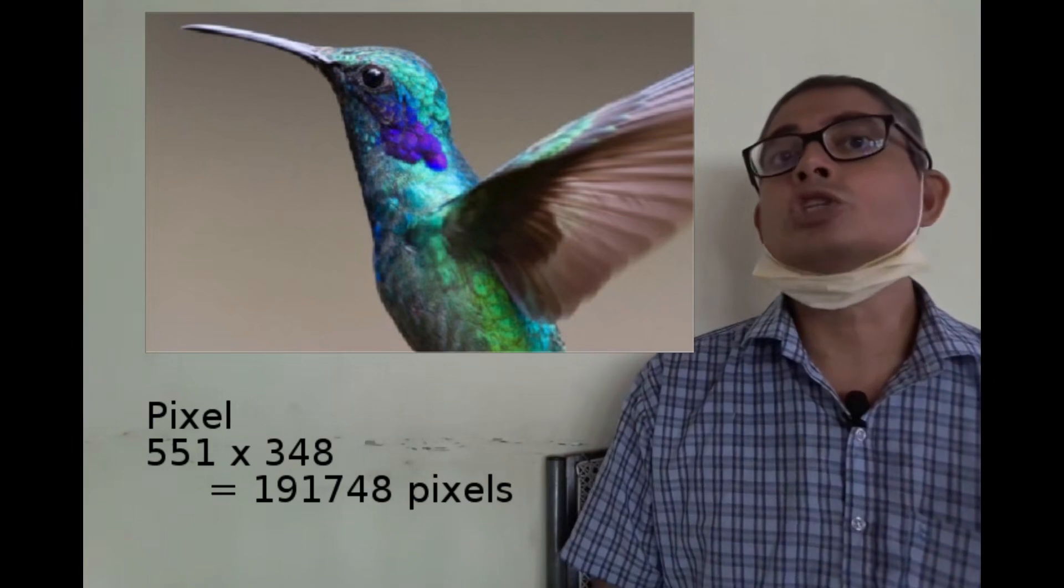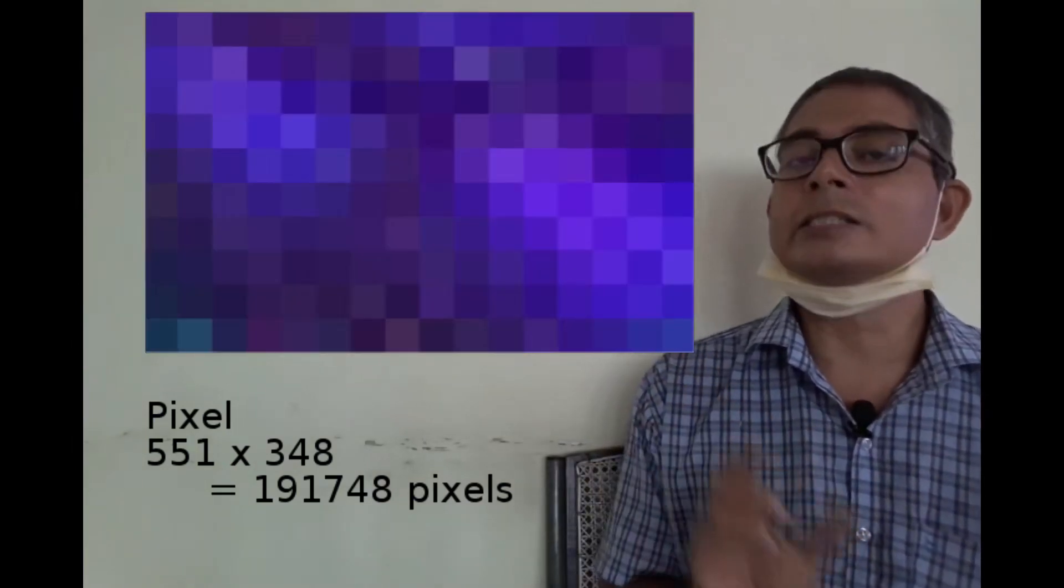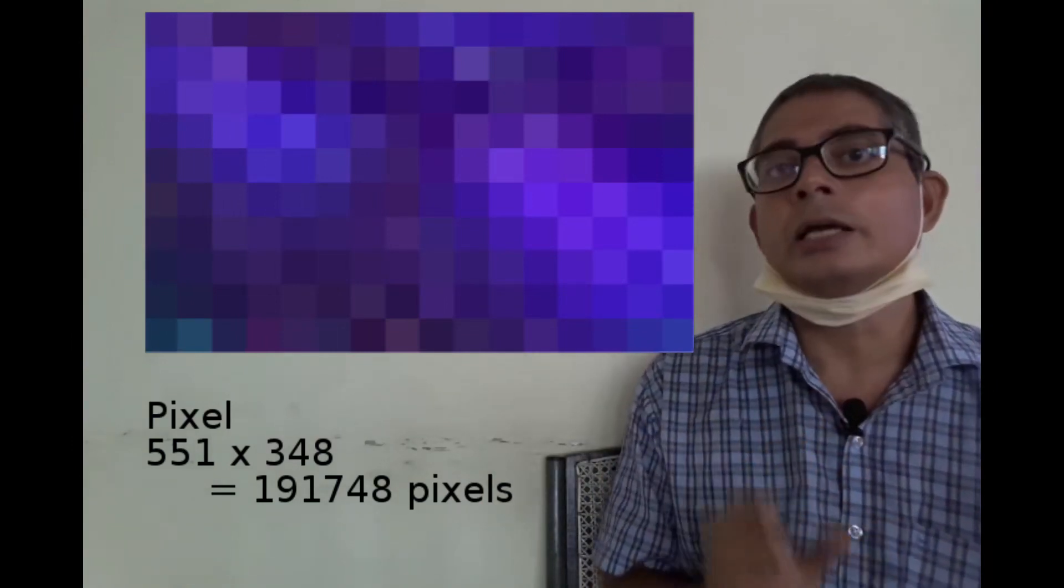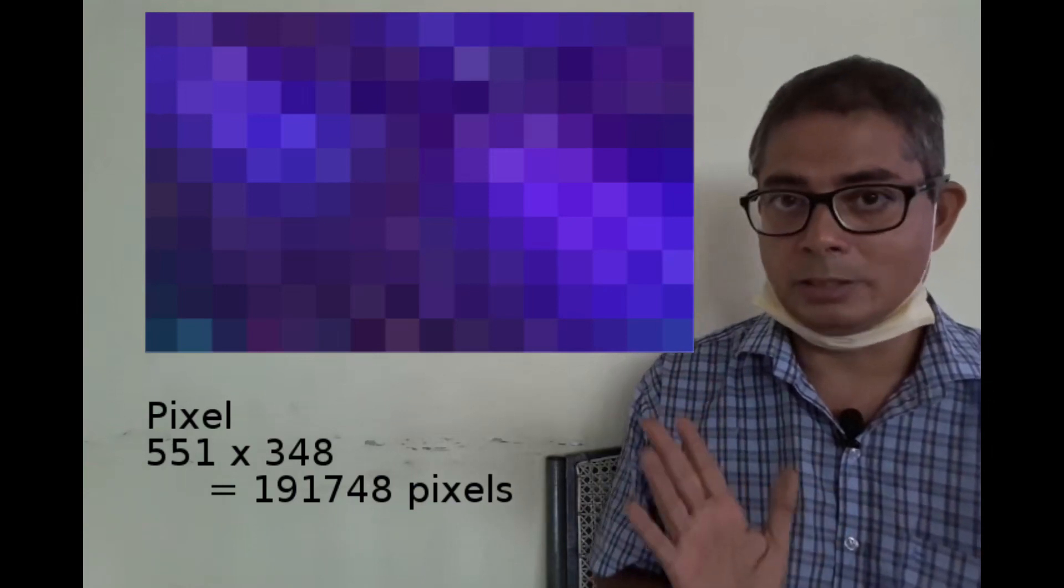Now let's zoom down to the pixels again. Each pixel is a tile of solid color, and each color is made of three components: red, green, and blue.